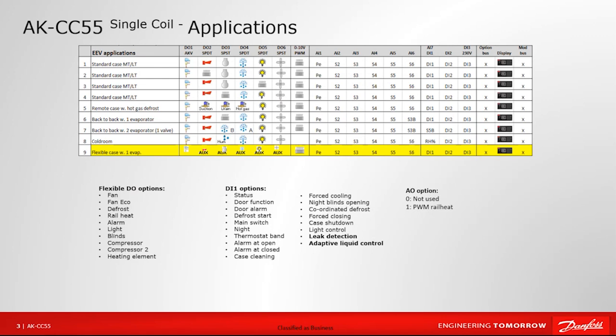What you see here is a chart showing the different options for the single coil CC55. For an application, we have nine different selections to choose from. Within each application, we're given a layout for what that would equate to with our relay functionality. The first relay is our solid state relay, which for any of these choices would be our electronic expansion valve. That wouldn't change from one application to the next.